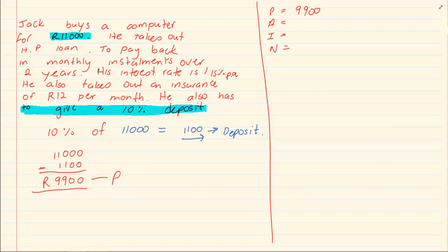Then we have that it is still over 2 years giving us an N of 2. Our interest rate 15% and we need to calculate A.